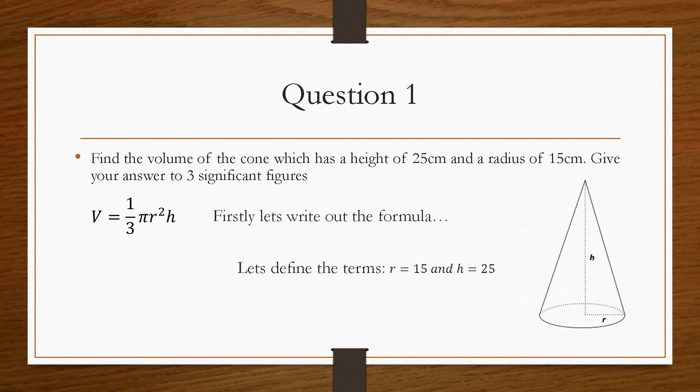So if we define what r is, which is 15, and we define what h is, which is 25, then we can substitute these into the volume equation. And that will give us V equals 5,890.486.